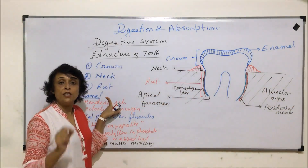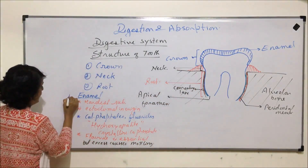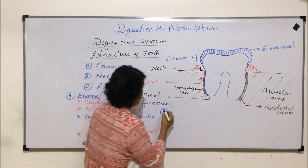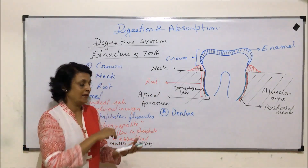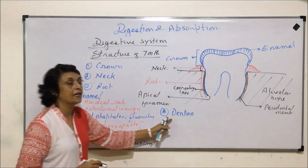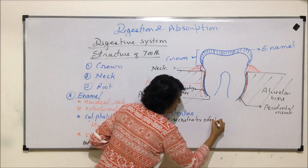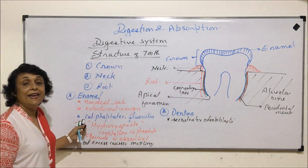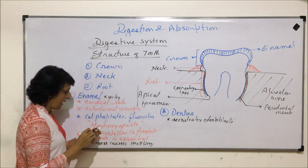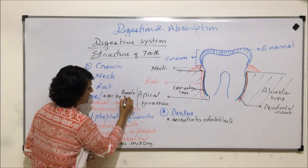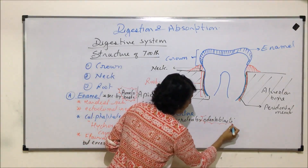The outermost layer found only in the crown is the enamel. These layers are produced or secreted by cells. Enamel is secreted by cells known as ameloblasts. The second layer is of another substance called dentine. Dentine is secreted by cells known as odontoblasts. So ameloblasts secrete enamel and odontoblasts secrete dentine.